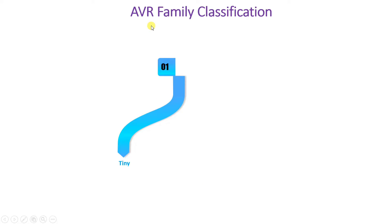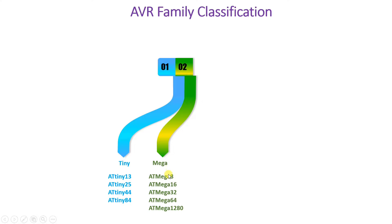Let us talk about AVR family classification. There are four family members. First is Tiny, which includes ATtiny13, ATtiny25, ATtiny44, and ATtiny84. The second family member is Mega, with ATmega8, ATmega16, ATmega32, ATmega64, and ATmega1280. That is how different ICs are available with the Mega member.